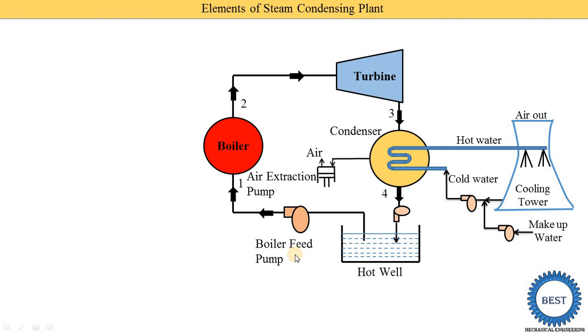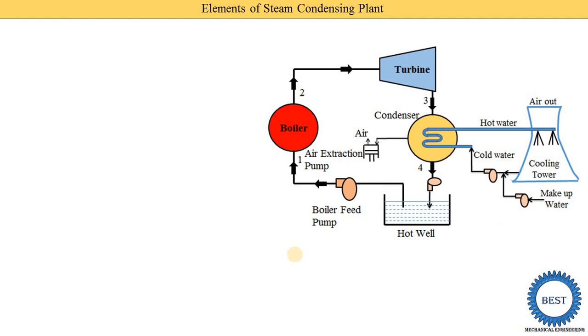So these are the various components or elements of the steam condensing plant. Now we will understand the functions of all the components in detail.